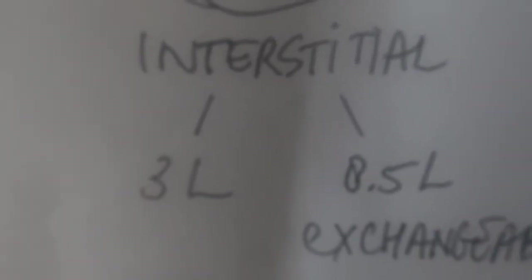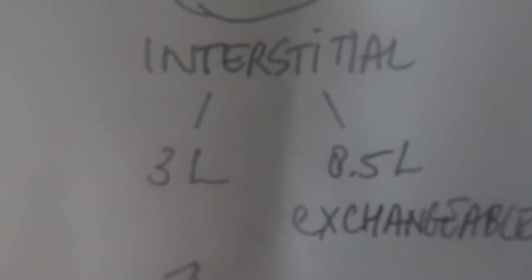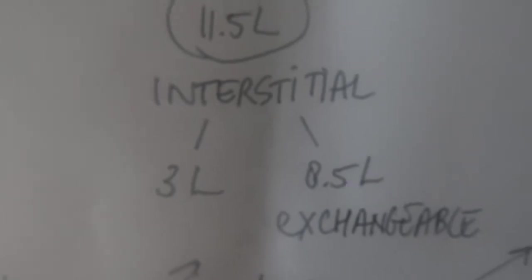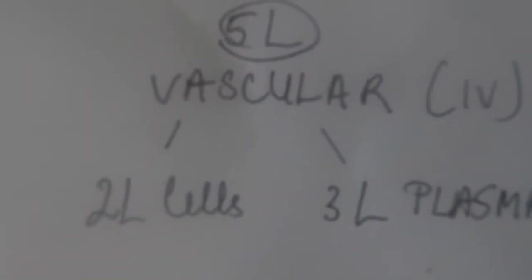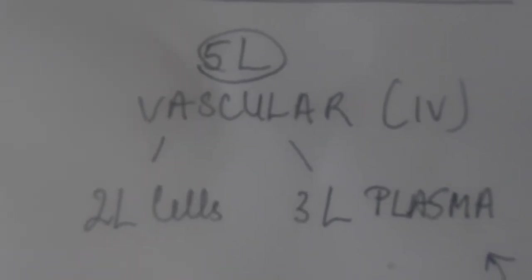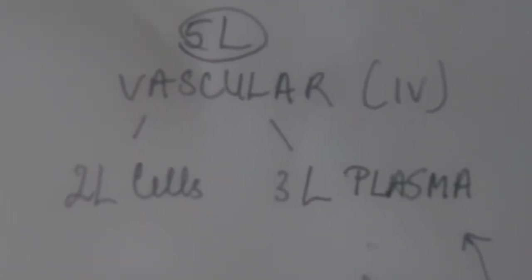About 11.5 liters of fluid between tissues called the interstitial fluid - about 8.5 liters is exchangeable, 3 liters will always remain. And then we have the fluid in the blood. The blood volume is about 5 liters, but only 3 liters of that is plasma and 2 liters is cells, mostly red blood cells.